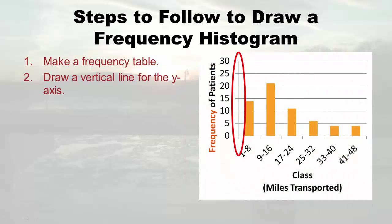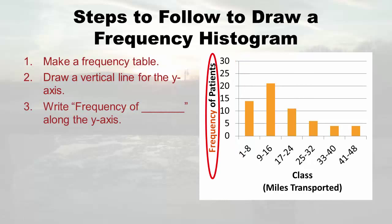Here's the histogram version of what's in that frequency table. I'm going to annotate this image to explain the order in which you draw it by hand. The first thing you do is draw a vertical line for the y-axis. Then you write the label next to the line — always starting with 'frequency of' and then whatever it is; in our example, it was patients.